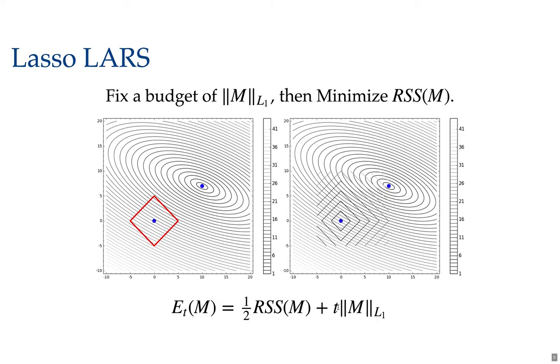So those are two ways to think about the Lasso algorithm. One is a constrained optimization problem. The other is an energy minimization problem with a tuning parameter t.